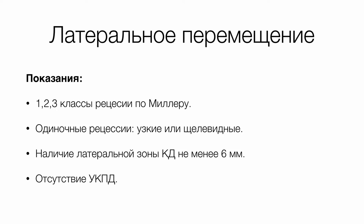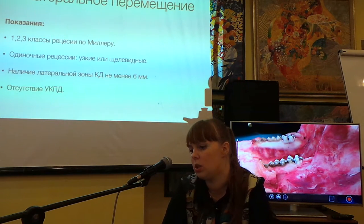Показания для латерального перемещения — это первый, второй, третий класс рецессий по Миллеру, одиночные рецессии, узкие или щелевидные рецессии, наличие латеральной зоны кератинизированной десны не менее 6 мм и отсутствие потери уровня клинического прикрепления десны. В таблице, которую мы разбирали в предыдущем модуле и которая будет отправлена вам на почту, вы увидите все применения данной методики — исходя из параметров толщины и ширины кератинизированной десны, наличия дефектов твёрдых тканей — придёт понимание, можете ли вы использовать данный метод или нет.